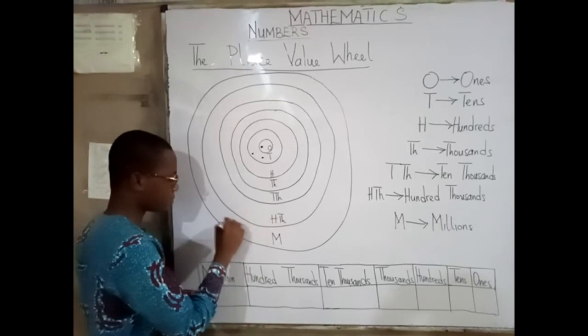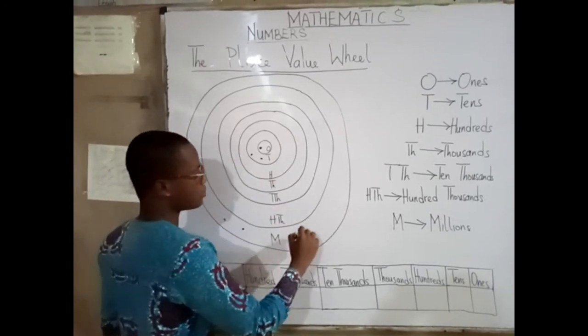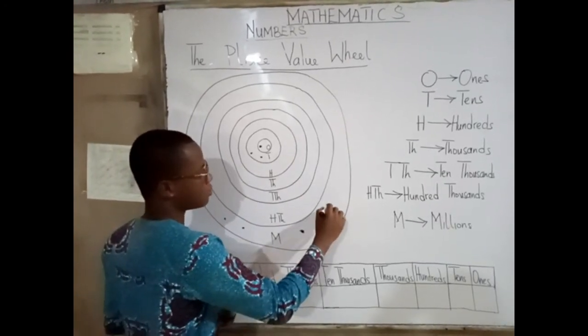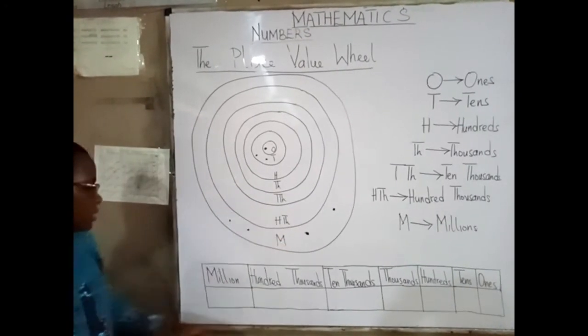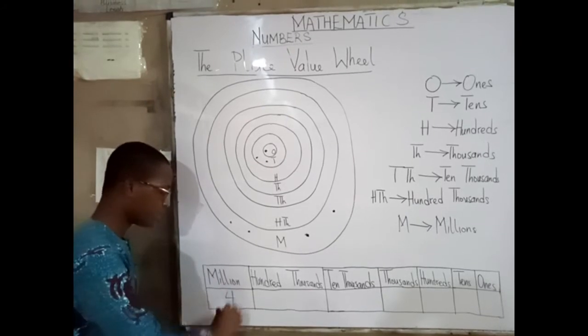if you happen to find four pebbles or dots at the millions, you come, then you fill it in here.